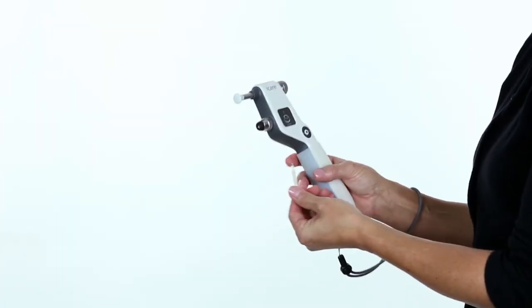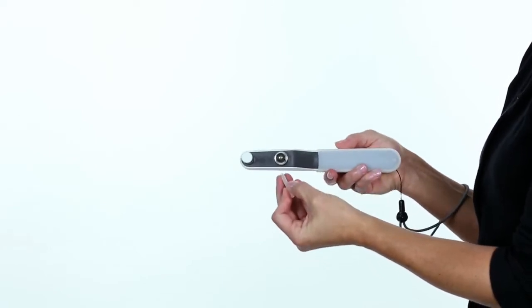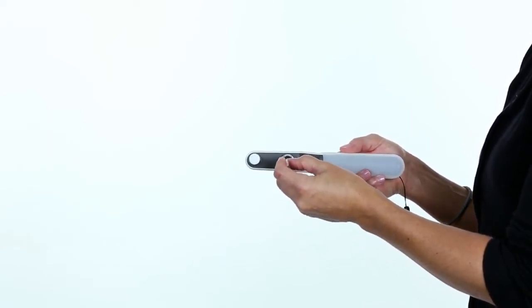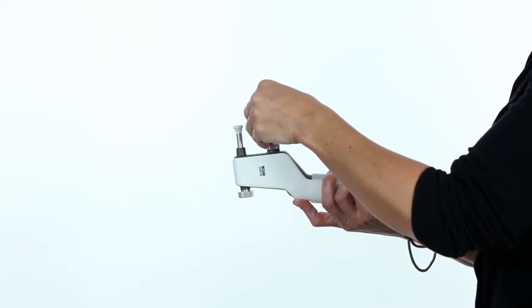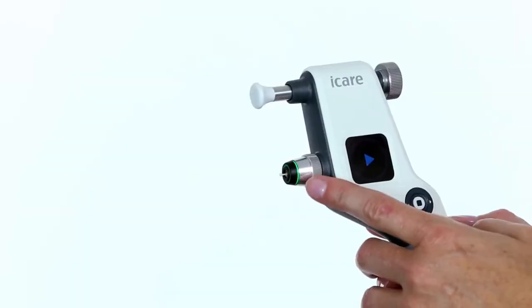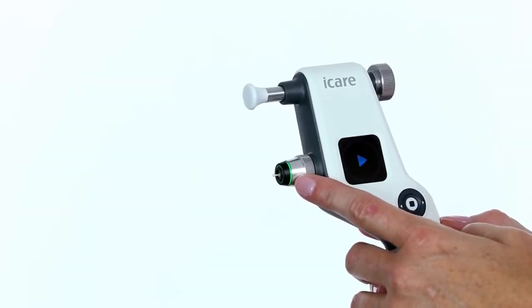Open the probe tube by removing the cap and insert the single-use probe into the probe base. Once the probe has been inserted into the tonometer, a green or red light will be visible around the probe base.